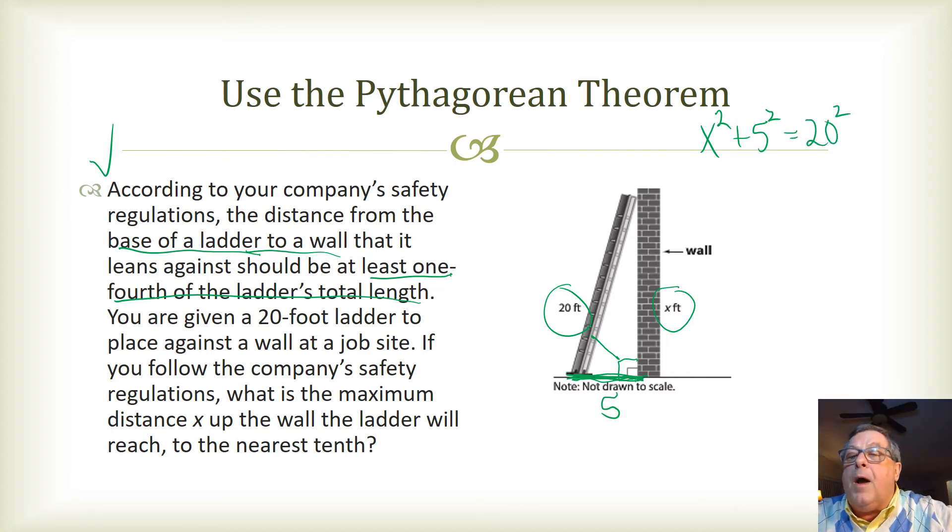20 being the hypotenuse, that's the c squared, 5 being one of the sides, that's the 5 squared, and we're going to solve for x squared. Well, let's go for this. So then we got x squared plus 25 equals, 20 squared is 400, and let's subtract 25 from both sides.